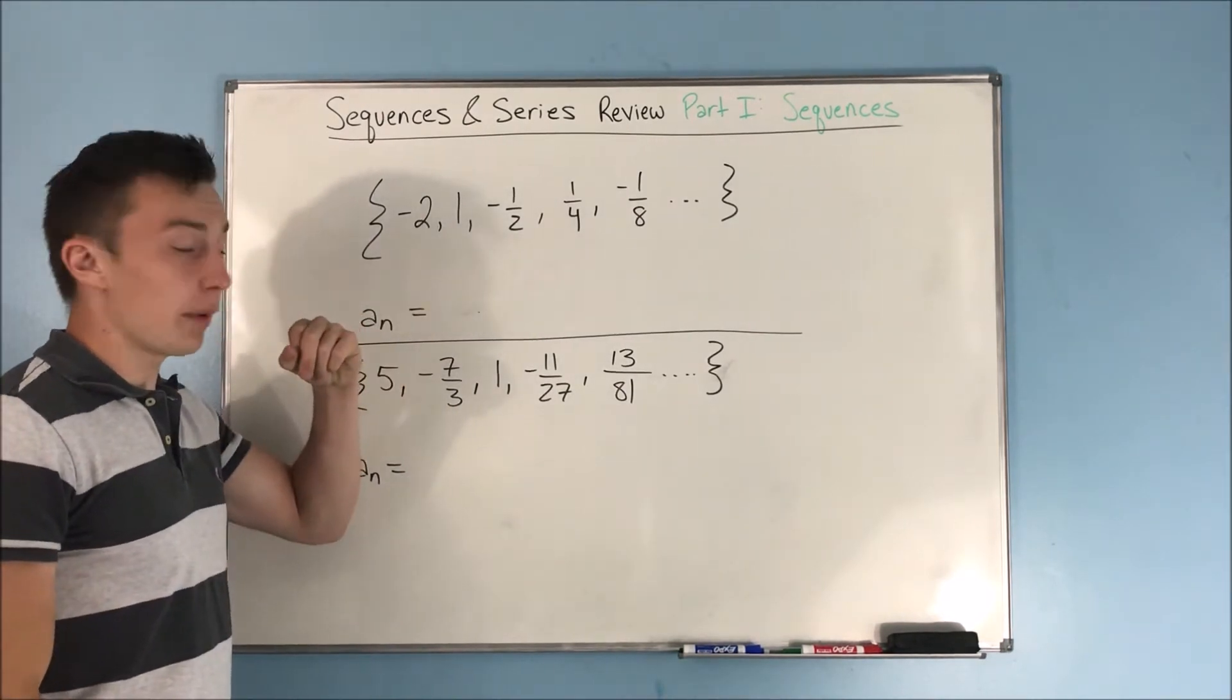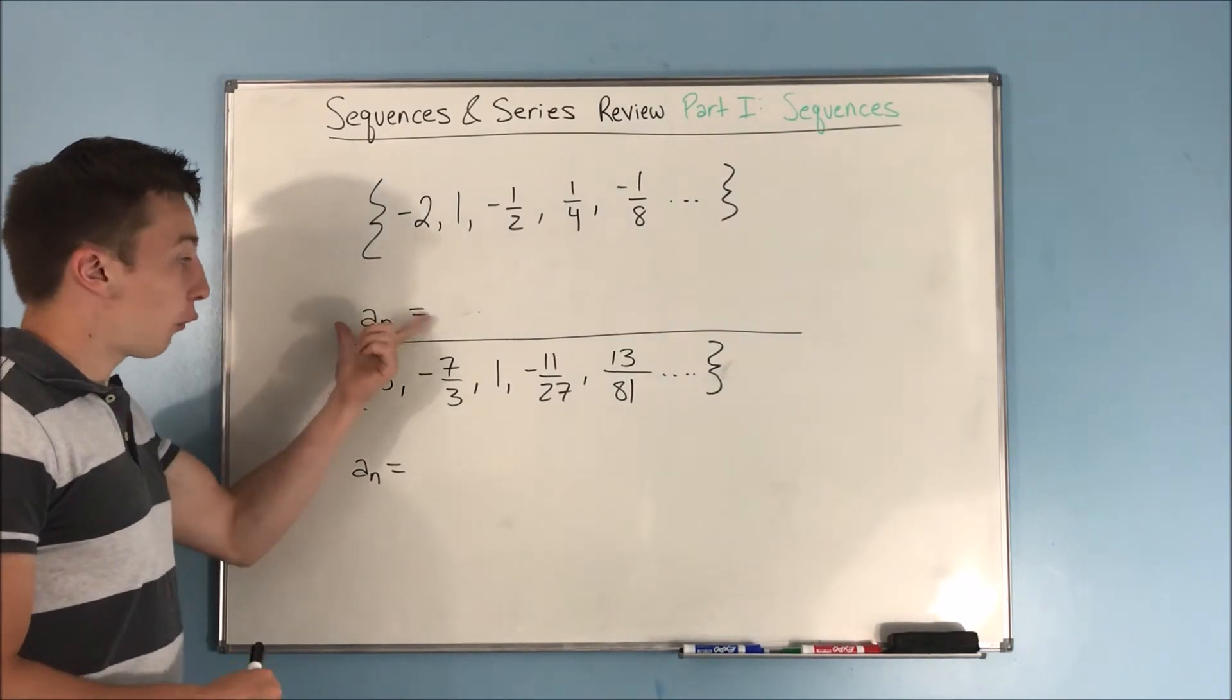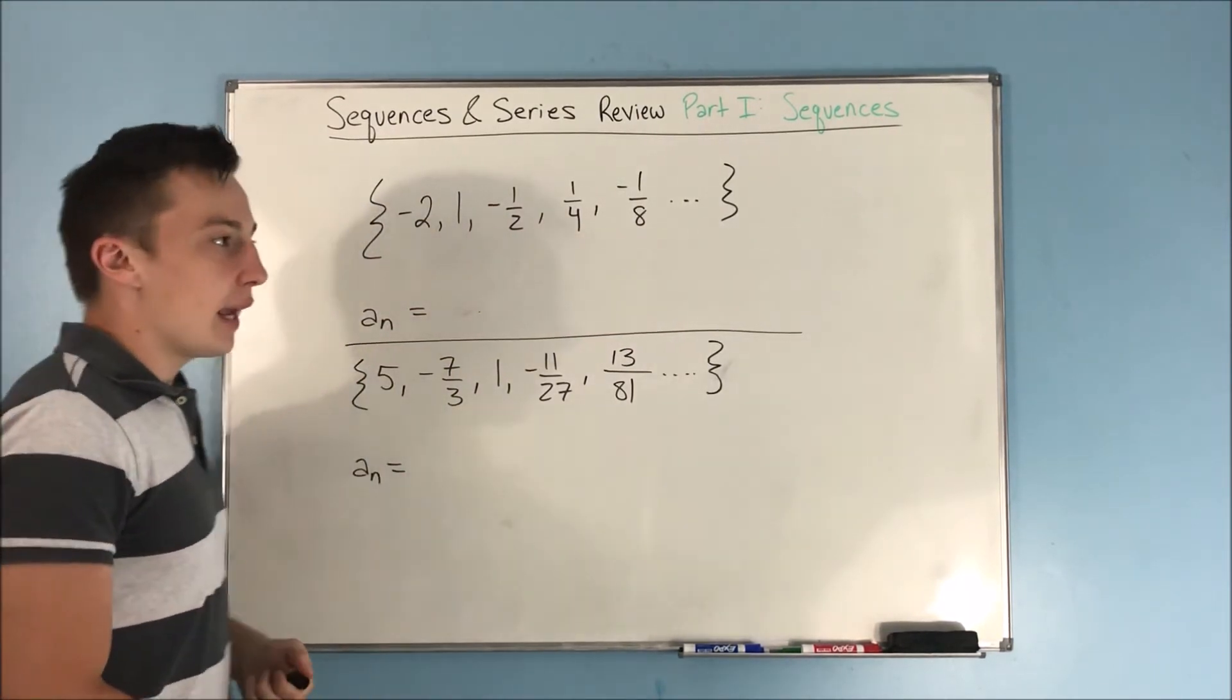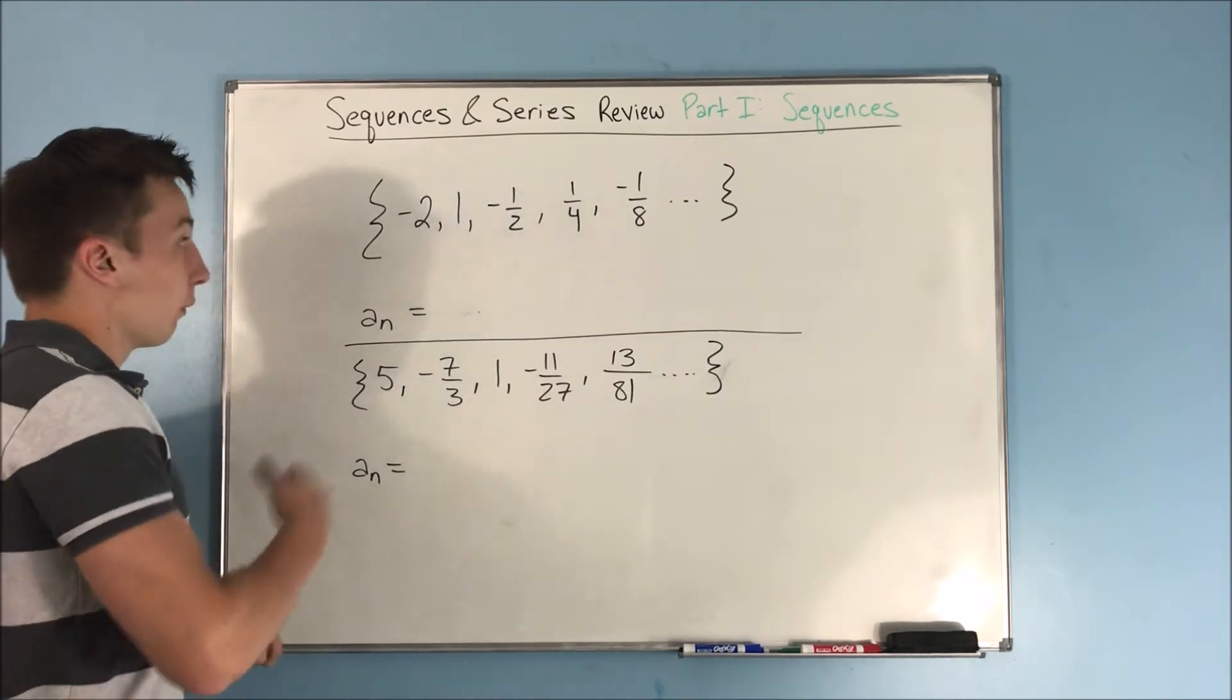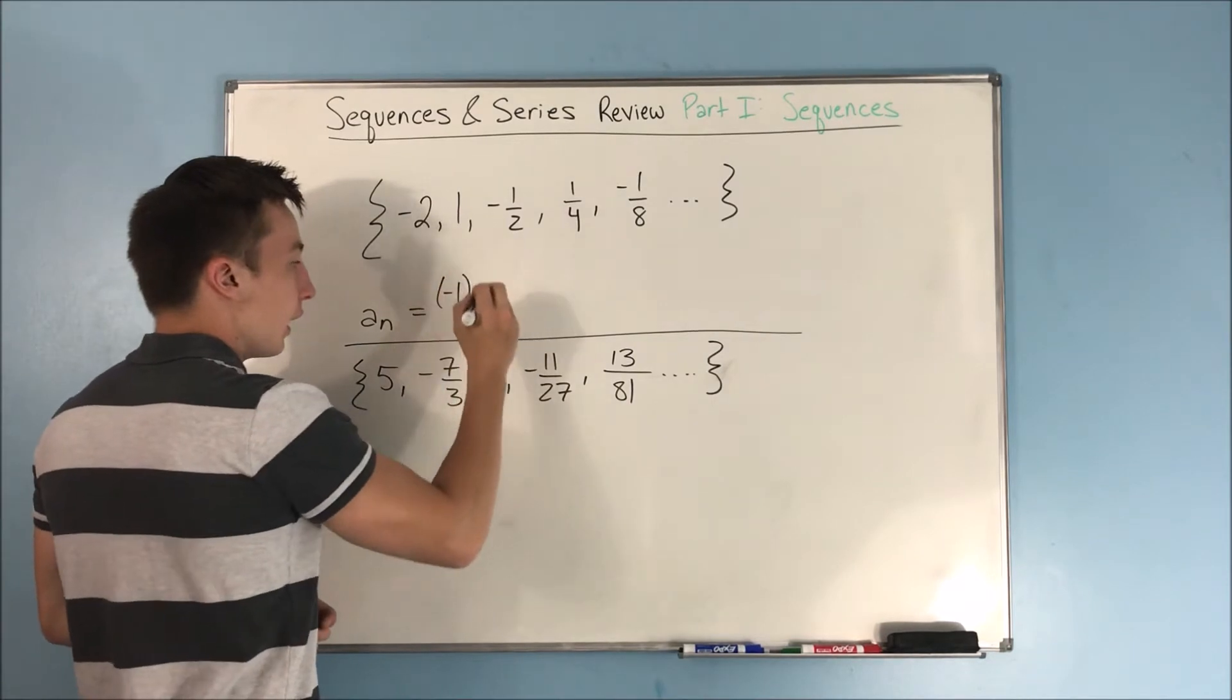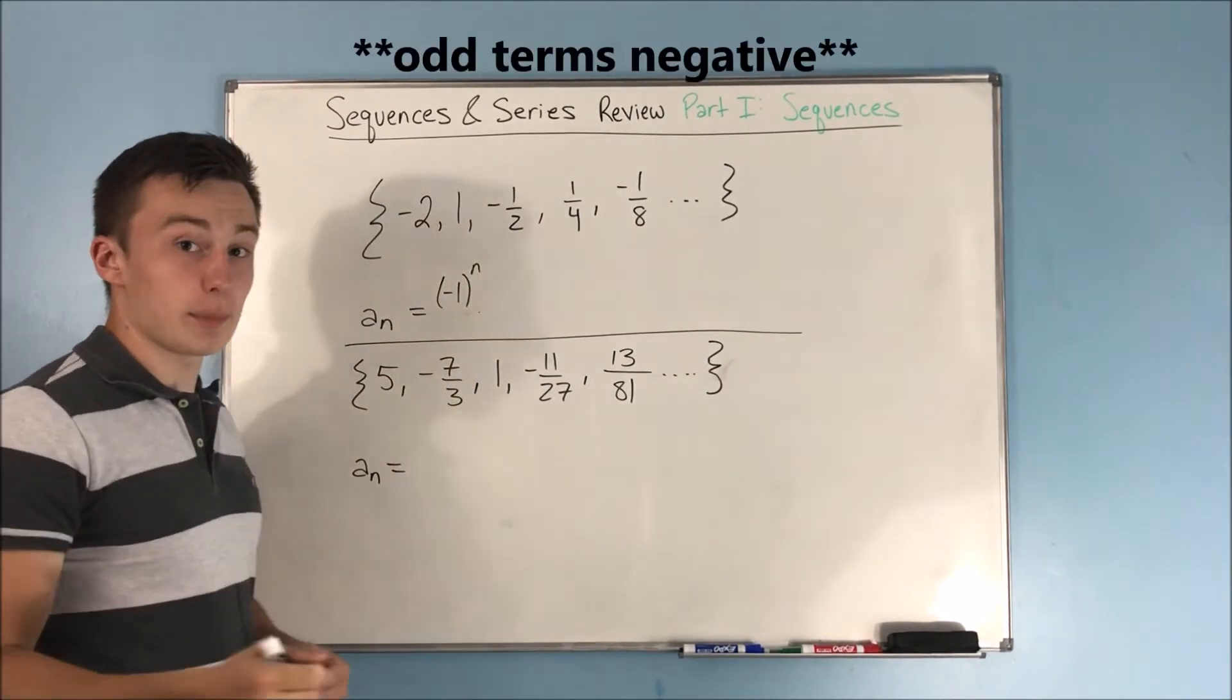Here we have our first written out sequence up on the board here, and that is -2, 1, -1/2, 1/4, -1/8. To start off here, to get our formula out of this written out sequence, what we're going to need to do is first look at the negatives. You see that these negatives are alternating. It's important to see whether these negatives are going to be on the odd terms or the even terms. You can see the negative is on the odd terms: 1, 3, and 5. What that means is that instead of putting a -1 to the n minus 1, because that will make all even terms negative, we're going to have a -1 to the n, which will make all odd terms negative.